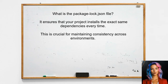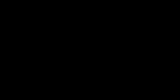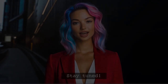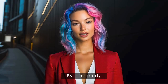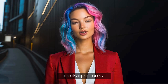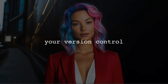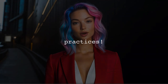So what exactly is the package-lock.json file? It ensures that your project installs the exact same dependencies every time, which is crucial for maintaining consistency across different environments. By the end of this video, you'll know exactly whether to commit this file or not, and you'll feel more confident in your version control practices.